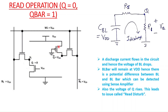BL bar will remain at VDD because the PMOS M4 is on, pulling that node to VDD. Since the bit line bar was pre-charged to VDD and this node is also at VDD, both points are at the same voltage, so no current flows and BL bar remains at VDD. Therefore, BL is getting discharged while BL bar remains at VDD. This potential difference between BL and BL bar, caused by Q equals zero, can be sensed using the sense amplifier.